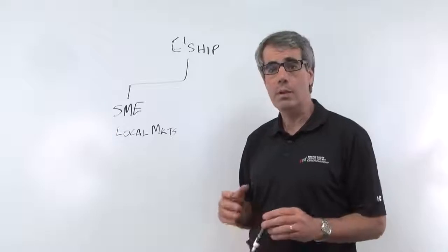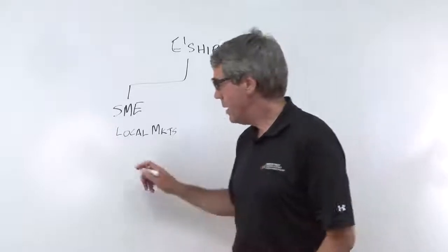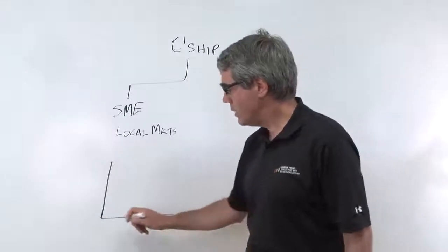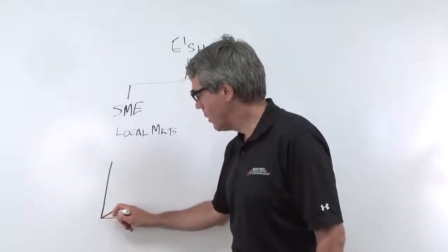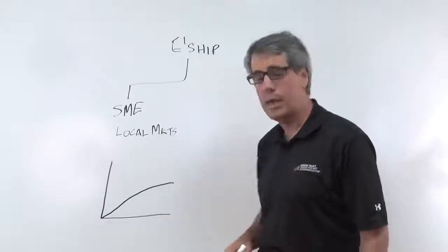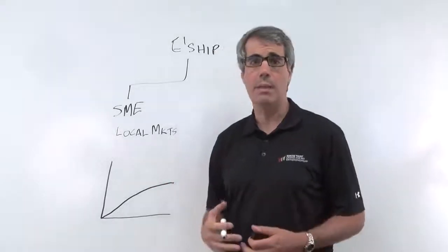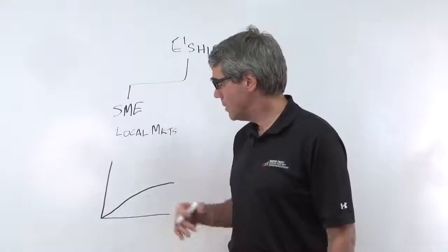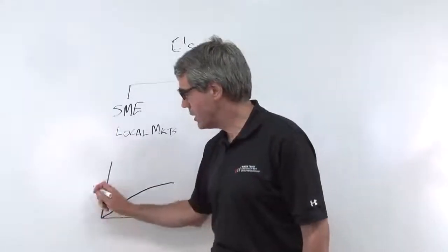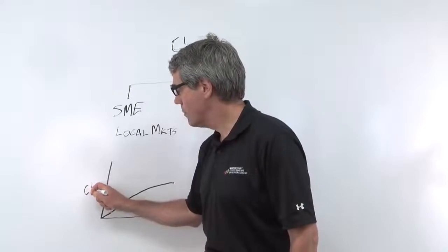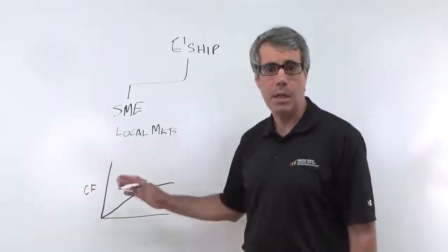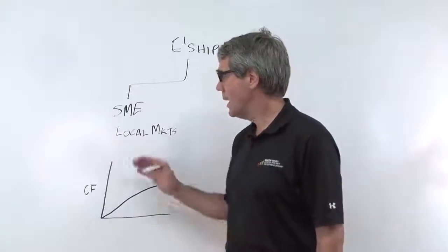The system that SMEs create shows kind of linear growth, and then at some point it usually taps out of the market. That's what it usually looks like — linear growth. And if this is cash flow from the business, there's not a tremendous amount of cash flow out. Again, a simplification.